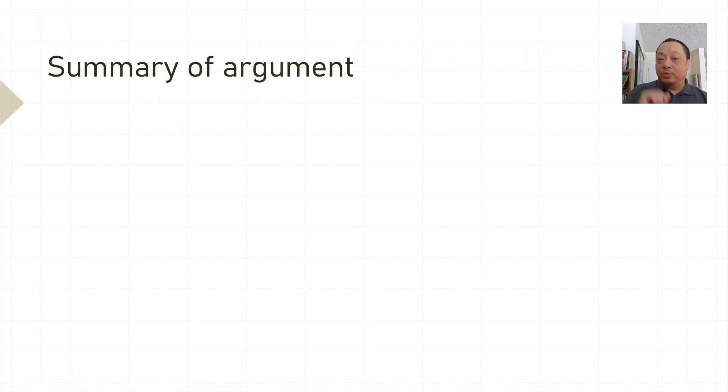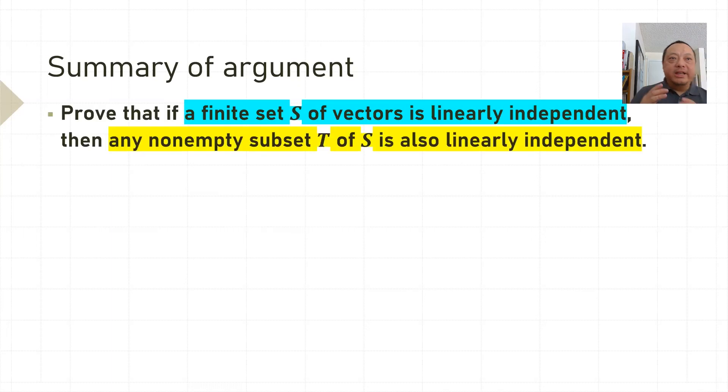Okay, let's summarize what we did. We needed to prove that if a finite set S of vectors is linearly independent, then any non-empty subset T of S is also linearly independent. The premise is a finite set S of vectors is linearly independent. The conclusion is any non-empty subset T of S is also linearly independent.